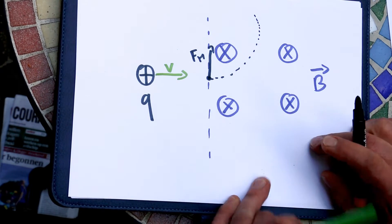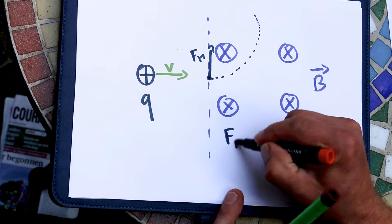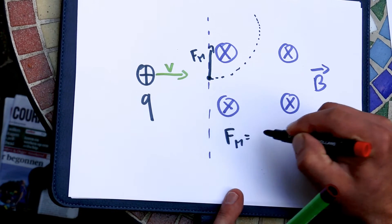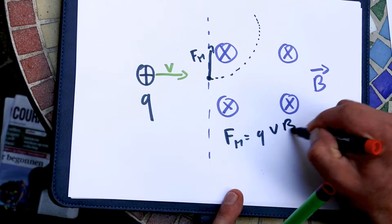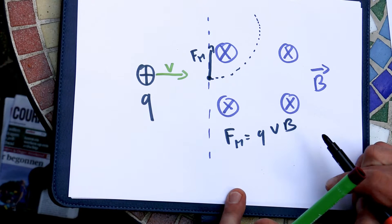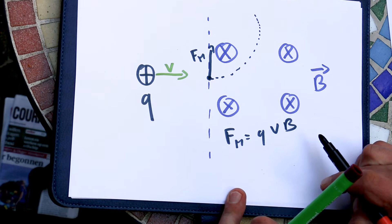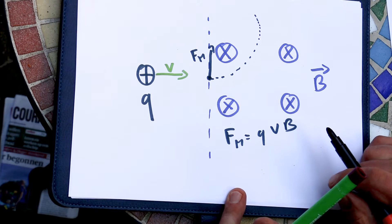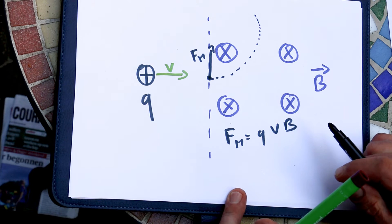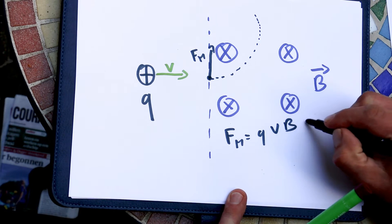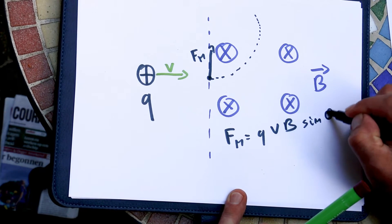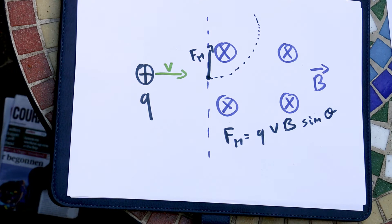The magnitude of the force will be Q·V·B, if V and B are perpendicular. If they are not perpendicular and form an angle θ between them, then you just add sinθ. That is the first concept you need to grasp before we start studying EM induction.